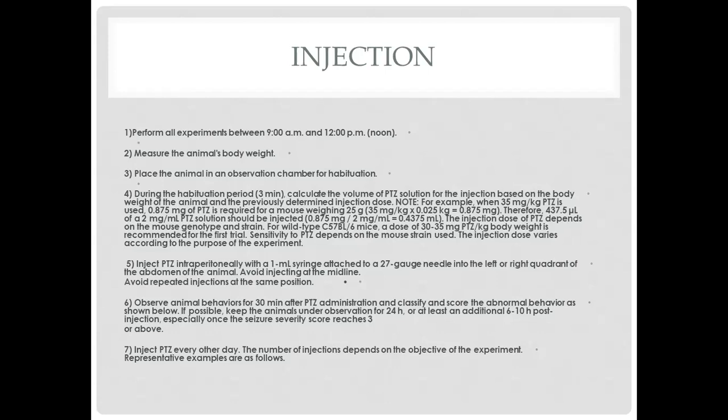An example is provided on screen to help understand Step 4. Step 5: inject PTZ intraperitoneally with a 1 mL syringe attached to a 27-gauge needle into the left or right quadrant of the abdomen. Avoid injecting at the midline and avoid repeated injections at the same position. Step 6: observe animal behaviors for 30 minutes after PTZ administration and classify the abnormal behavior using the seizure severity score. If possible, keep the animals under observation for 24 hours or at least an additional 6 to 10 hours post-injection, especially once the seizure severity score reaches 3 or above.